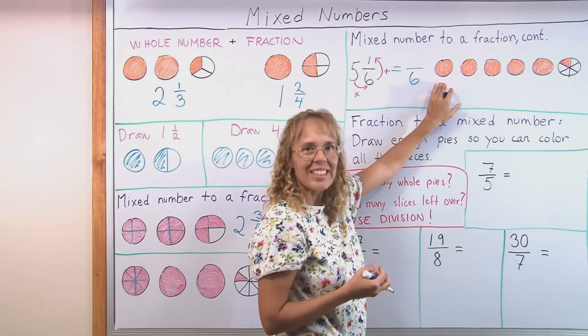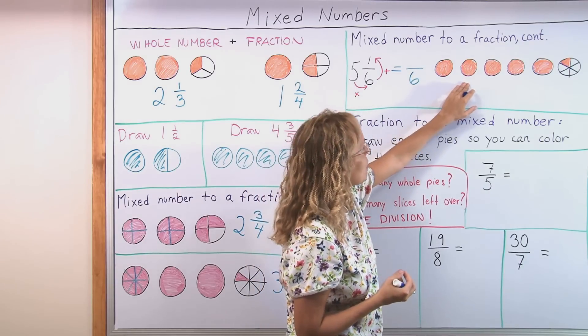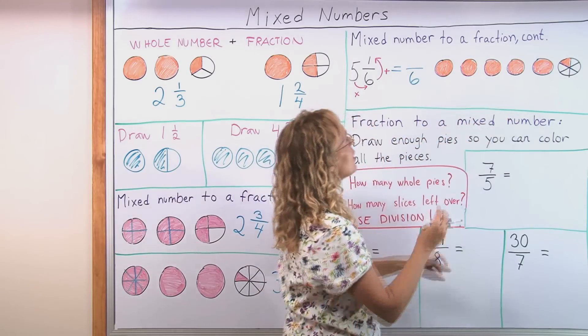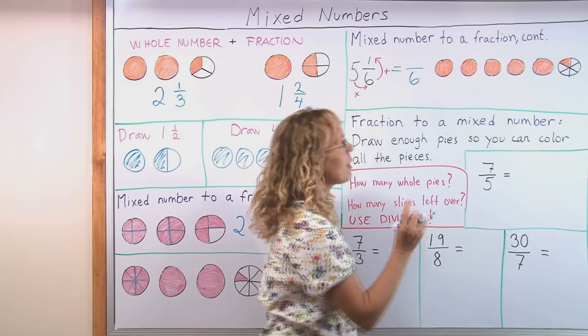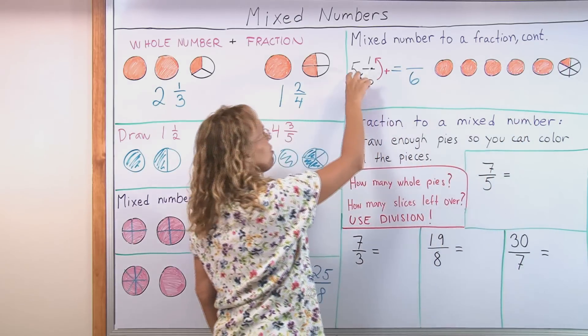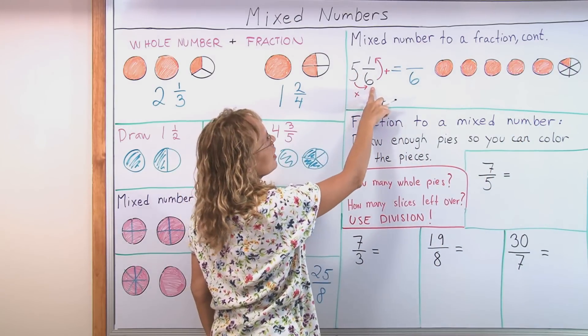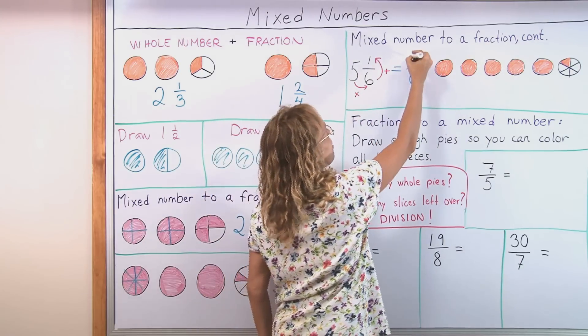And then how many? This would be divided into six sixths. And so this one and this one and this one. So there will be five times six sixths plus one. So you go five times six is thirty plus one. Thirty-one.